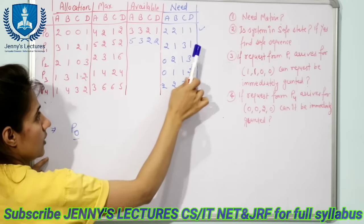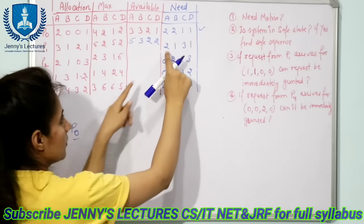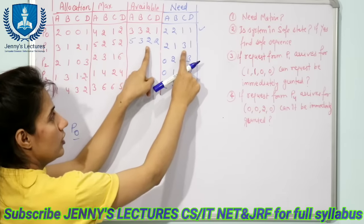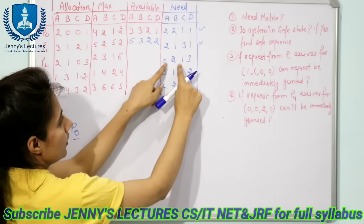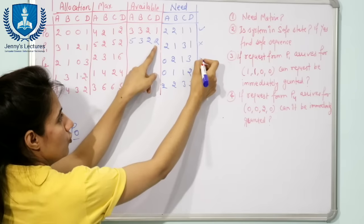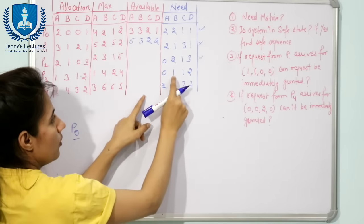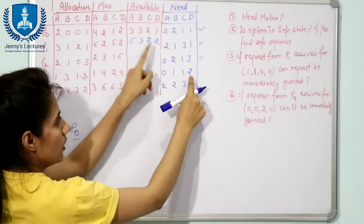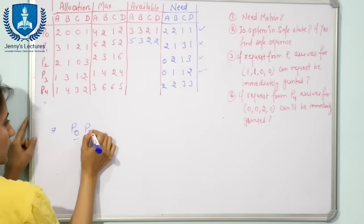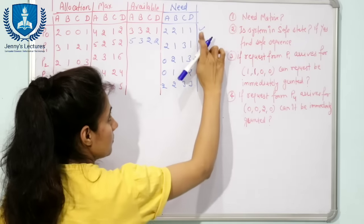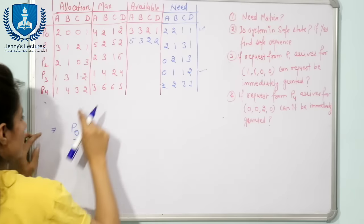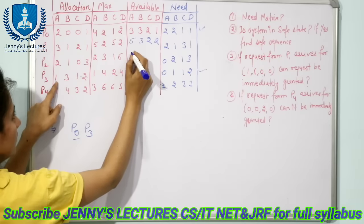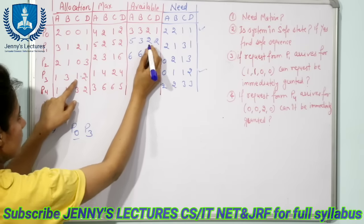With the new available resources, check which process need we can fulfill next. P1 needs 3 instances of C but we have only 2 — cannot fulfill. P2 needs 3 instances of D, we have 2 — cannot fulfill. P3 needs 0, 1, 1, 2 and we have 5, 3, 2, 2 — yes, we can fulfill this. So next is P3. Add P3's allocation to available: 5+1=6, 3+3=6, 2+1=3, 2+2=4.